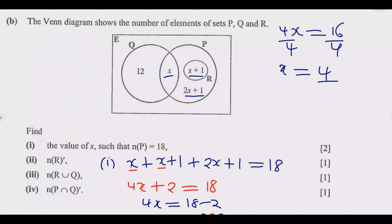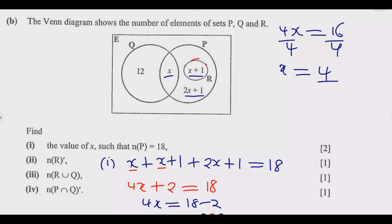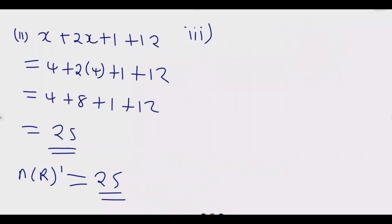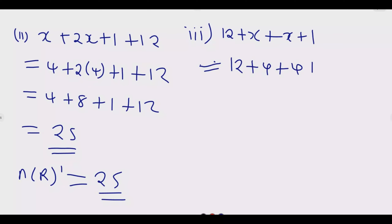For Roman numeral 3, we find the number of elements in R union Q. This includes all elements that are in R or Q. Adding the relevant regions: 12 + X + (X + 1) = 12 + 4 + (4 + 1) = 12 + 4 + 5 = 21. So 21 is the answer for R union Q.